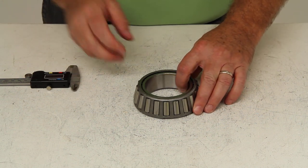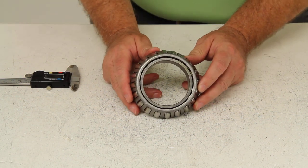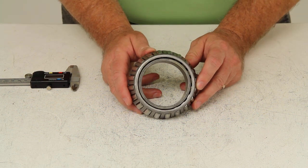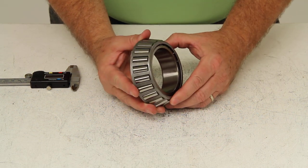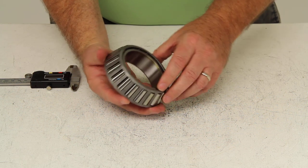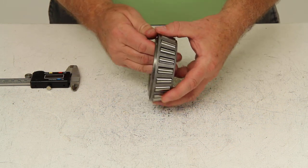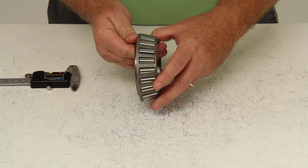Today we're going to review part number 3984. This is the Redline inner wheel bearing. This replacement wheel bearing is a high-quality tapered roller wheel bearing designed for high-speed use.